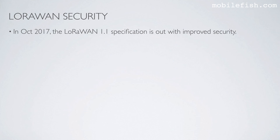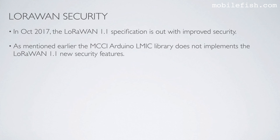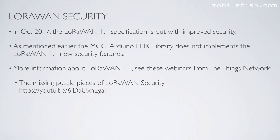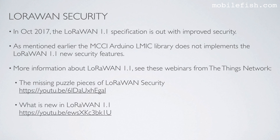In October 2017, the LoRaWAN 1.1 specification was released with improved security. As mentioned earlier, the MCCI Arduino LMIC library does not implement the LoRaWAN 1.1 new security features. More information about LoRaWAN 1.1: see these webinars from The Things Network, 'The Missing Puzzle Pieces of LoRaWAN Security' on YouTube, and 'What is New in LoRaWAN 1.1' on YouTube.